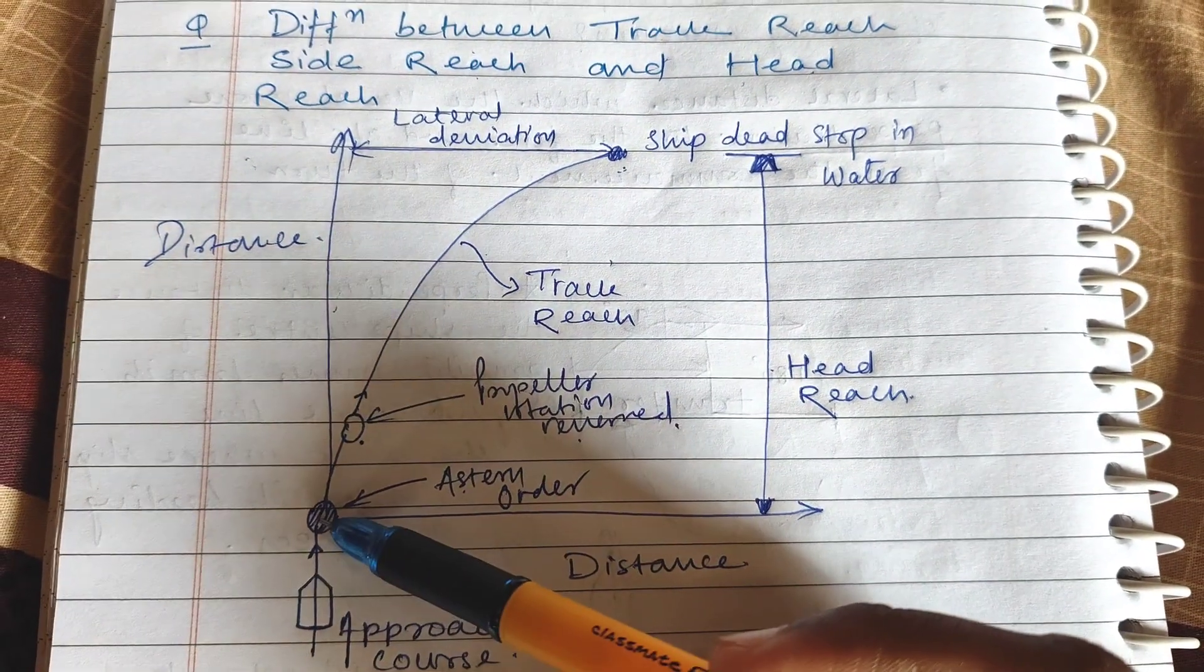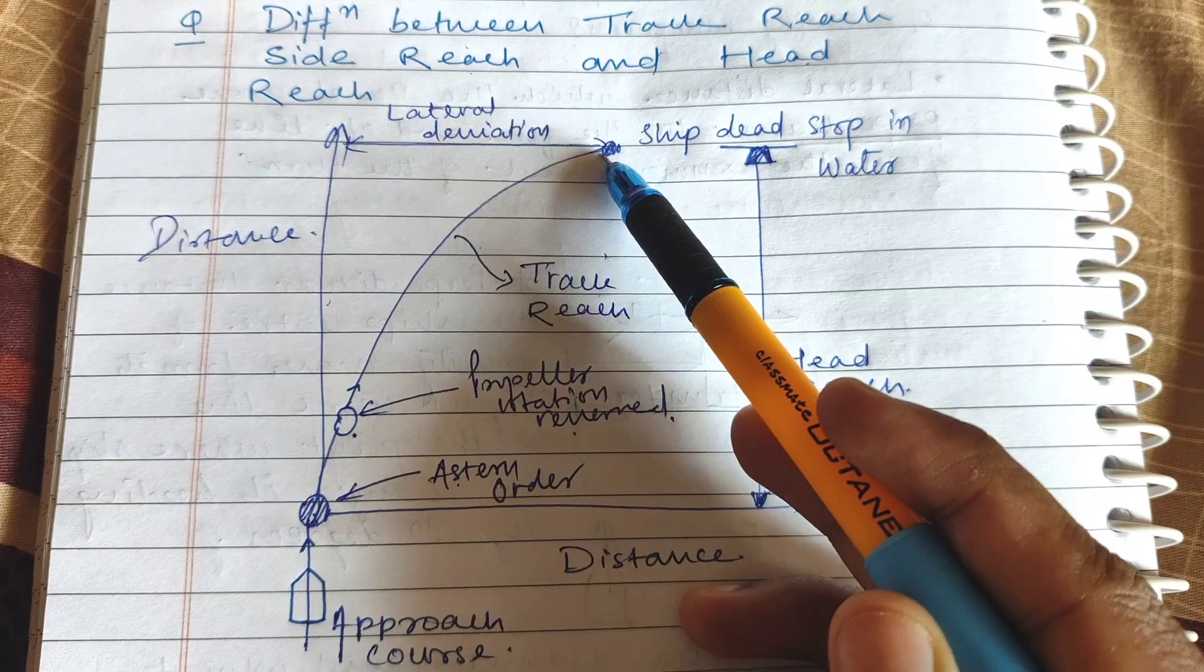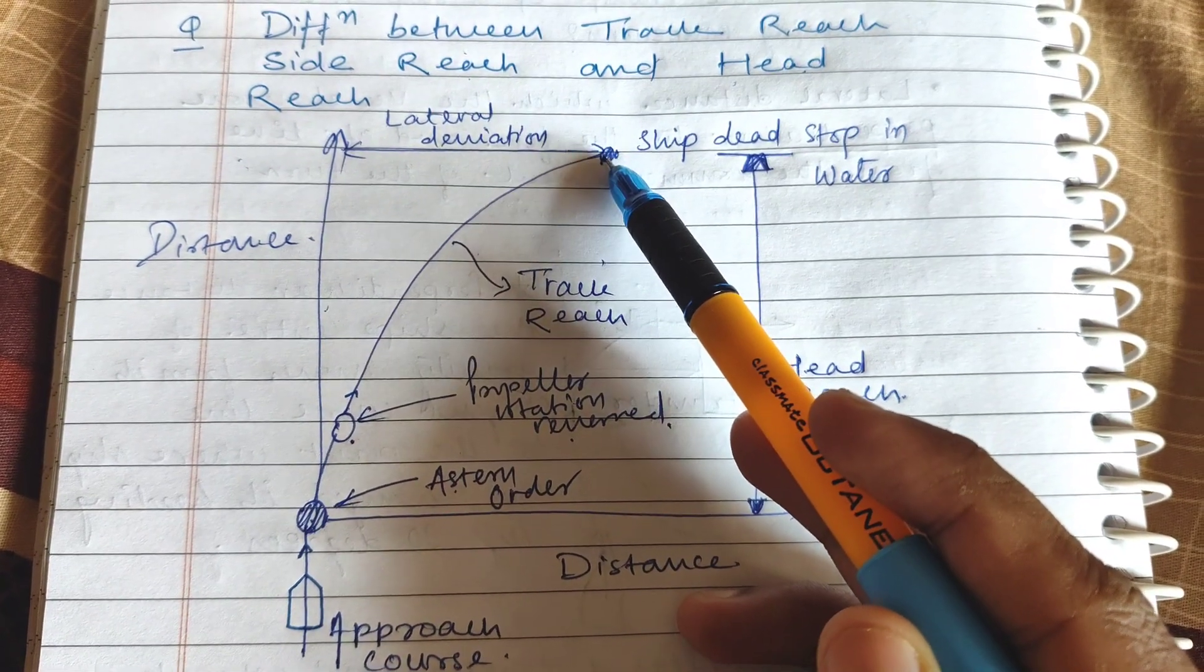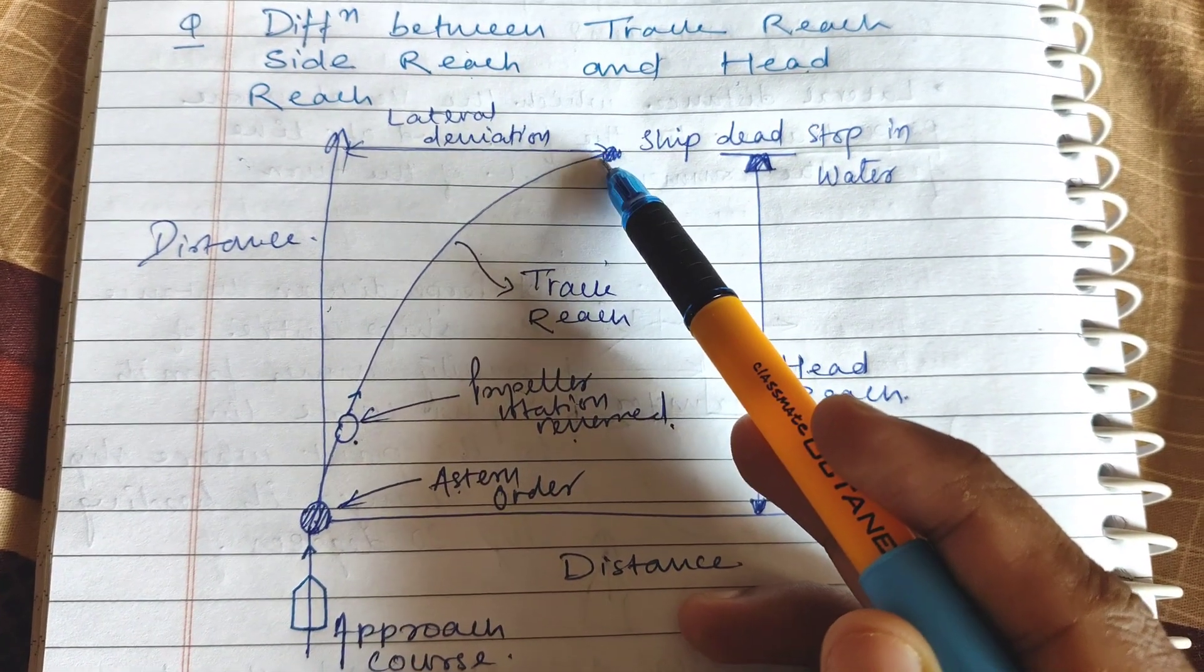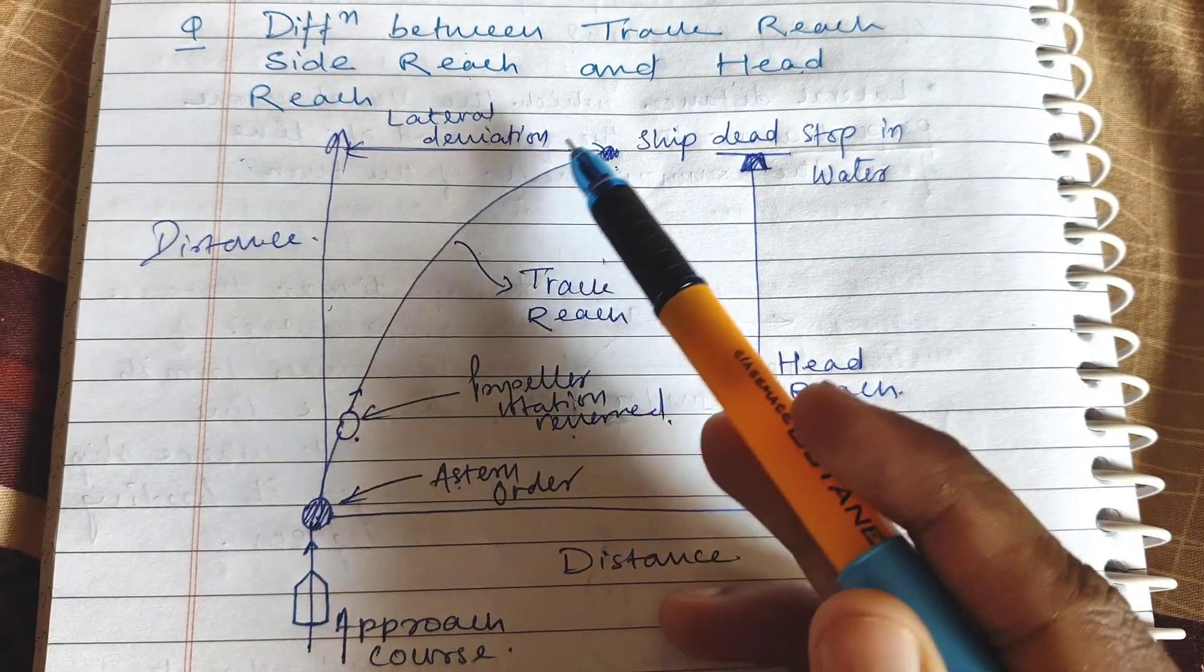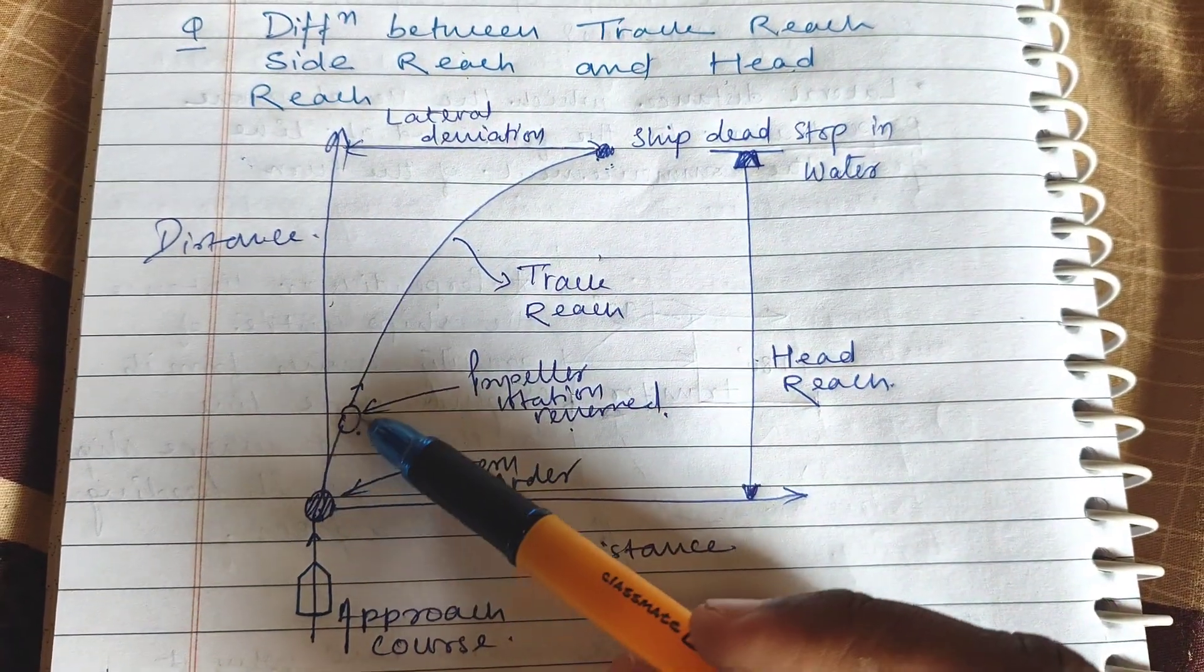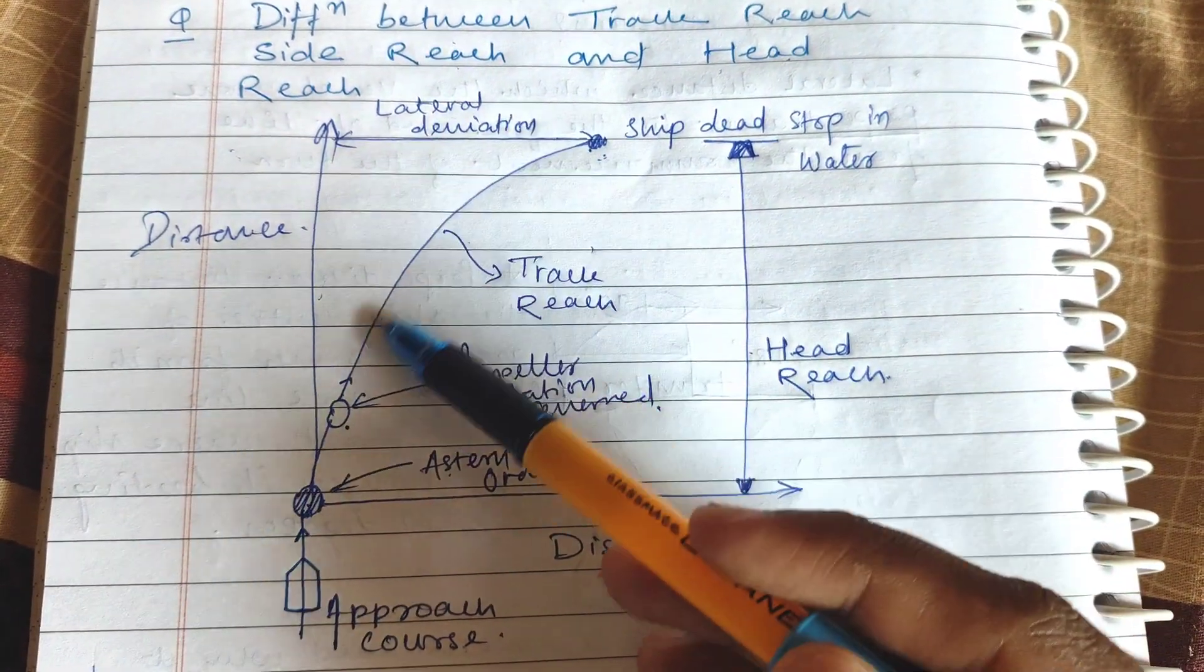From this point to this point is known as track reach—that is, the distance along the actual path tracked by the ship until the ship reverses. It is along the ship's curled path.